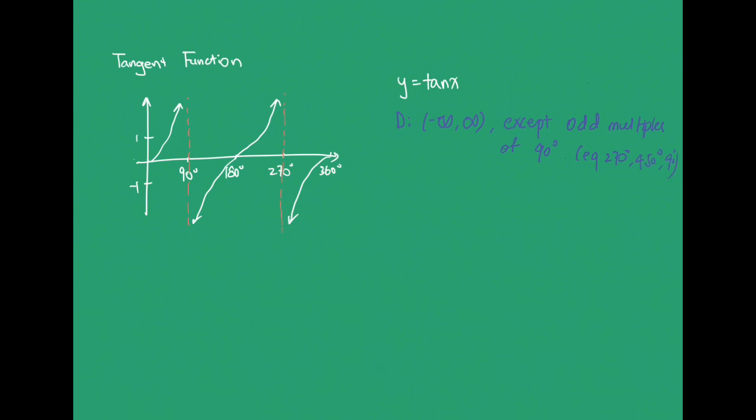And the tangent function is different to the sine and cosine function because it has a range of all real numbers, instead of being in between 1 and negative 1. Also, since negative tan x is the same as tan negative x, it's an odd function.